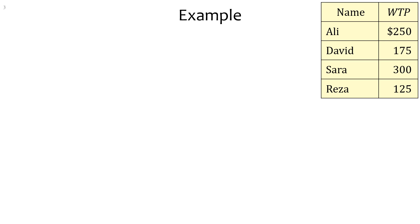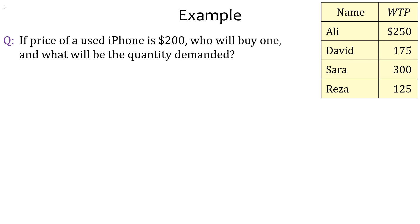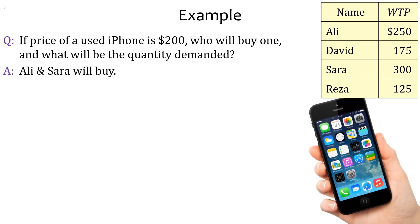Let's see how this works in an example. We're given a table with consumers and their willingness to pay. If the price of a used iPhone is $200, Sarah's WTP is $300 so she'll buy, and Al will also buy because the price is below their WTP. The other two won't buy because they don't value the product that much. The quantity demanded is two.